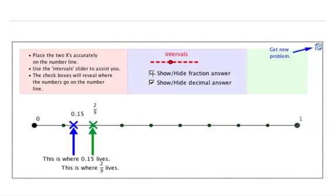And if we want to check our answer, boom, sure enough. So if this is where 0.15 lives, and this is where 2/9 lives, we now know that 2/9 is larger than 0.15. And we also have learned how to place decimals and fractions on the number line.